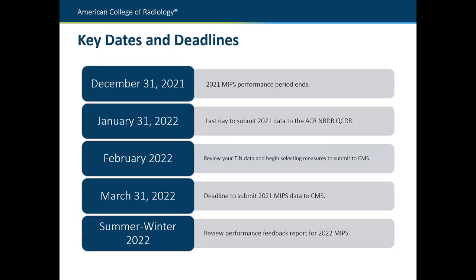A quick reminder about some key dates and deadlines. On December 31st last year, the 2021 MIPS performance period ended. January 31st — the end of this month — is when you should really have all of your 2021 data submitted to ACR. This doesn't mean we close the portal after January 31st, because people find issues and need to re-upload files. You will still be able to resubmit files after January 31st and make any corrections needed, but we want the bulk of your data submitted.